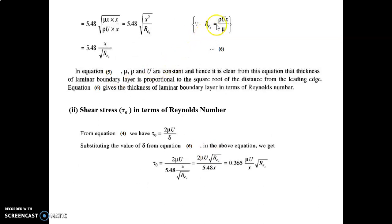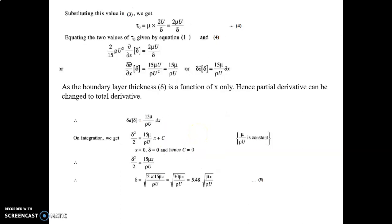We know that Reynolds number Re_x = ρUx/μ. After solving, we find δ = 5.48x / √(Re_x), which is equation 6. Since μ, ρ, and U are constant, it is clear from the equation that the thickness of the laminar boundary layer is proportional to the square root of the distance from the leading edge. Equation 6 gives the thickness of the laminar boundary layer in terms of Reynolds number, which is the first quantity asked.